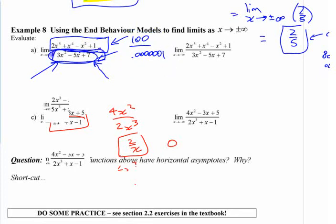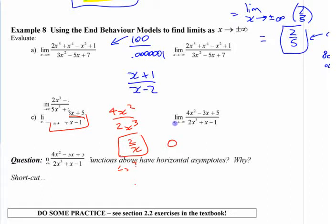If you look for vertical asymptotes by looking for where the denominator is zero in a rational function like that, right, when you have x plus 1 over x minus 2, it's going to have a vertical asymptote at what? Vertical asymptote is x equals 2.